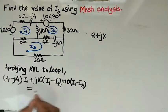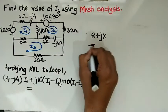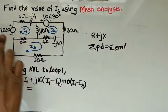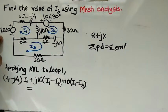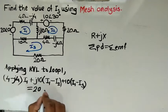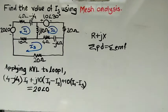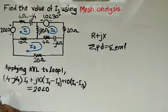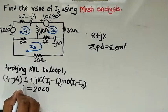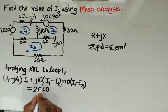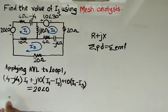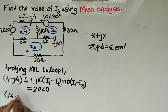Applying KVL: sum of potential drops equals sum of EMF. The voltage source here is 20∠0°. After applying KVL and simplifying by collecting all I1 terms — from 4 − j4, j10, and 10 — we get 14 + j6 total. So it becomes (14 + j6)·I1...